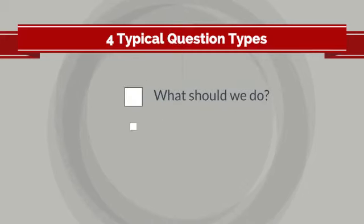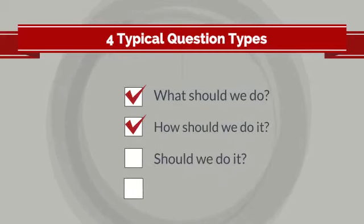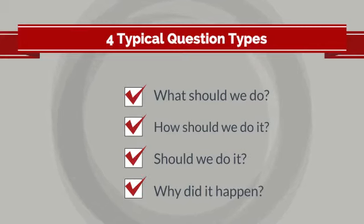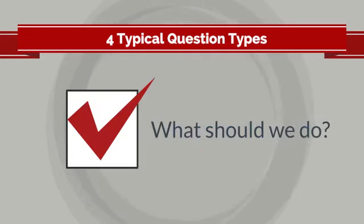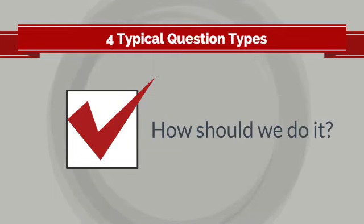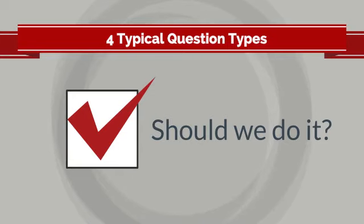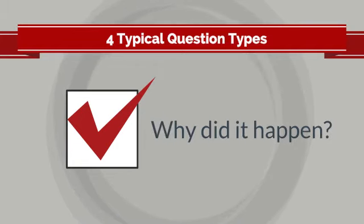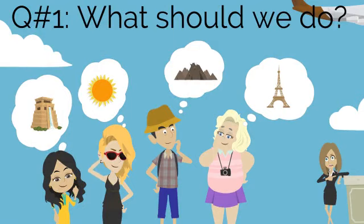The four typical question types are: 1. What should we do? 2. How should we do it? 3. Should we do it? 4. Why did it happen? Question 1, 'What should we do?' is used when your presentation is to influence or persuade your audience. Question 2, 'How should we do it?' is useful if the solution or direction has already been determined and your presentation is about execution. Question 3, 'Should we do it?' is used when your presentation needs to lead to a decision. Question 4, 'Why did it happen?' is a good question when your presentation is looking to inform. For our example, we want to influence, so the question is Question 1: What should we do?